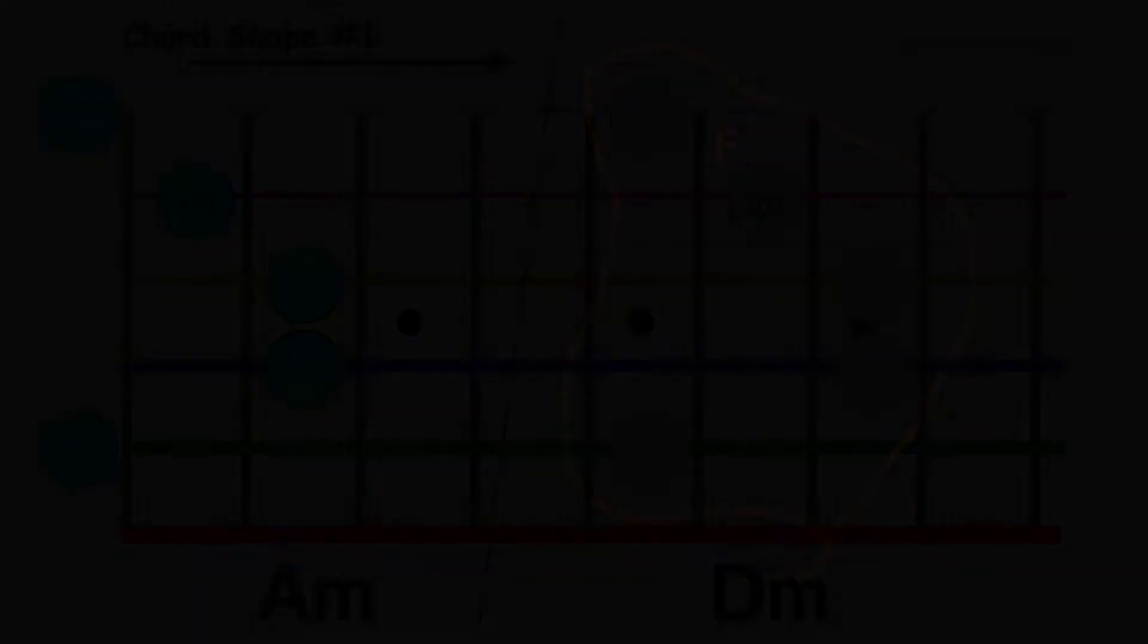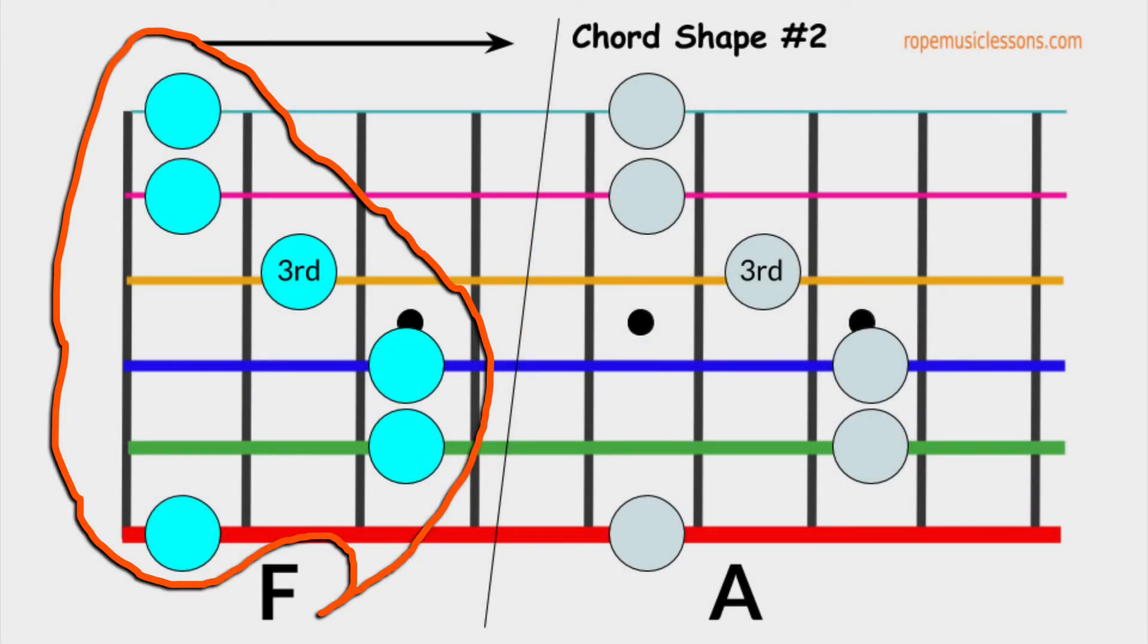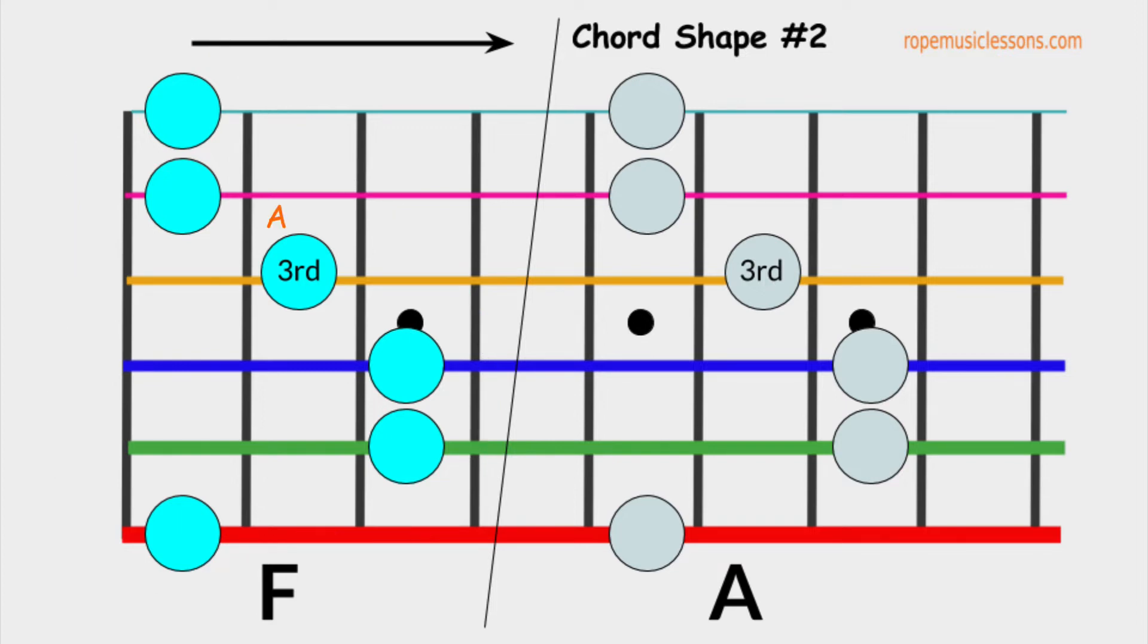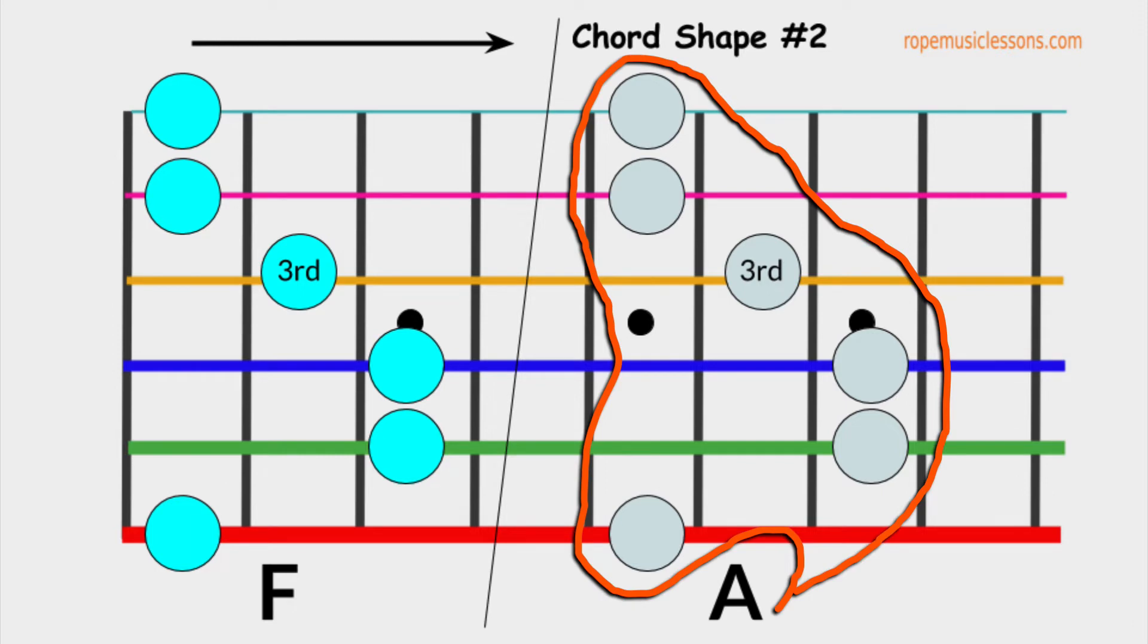Let's move on to chord shape number two. This is an F major chord. The third of F major is the note A. This is also movable. This is A major. The third of A major is the note C sharp.